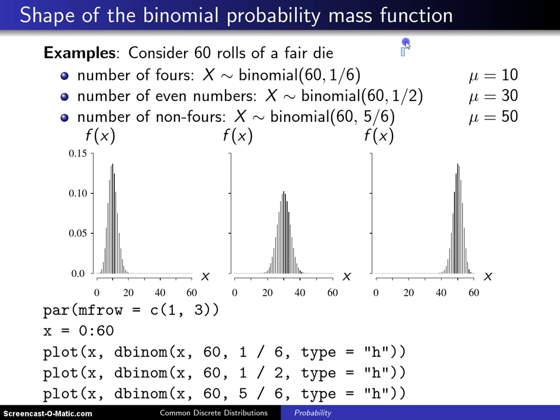Now from the previous slide you know that mu equals n times p. In this first case n times p turns out to be 10, in the second case n times p is 30, and in the third example n times p is 50.